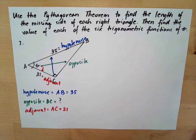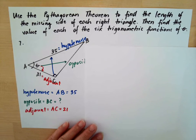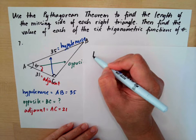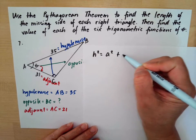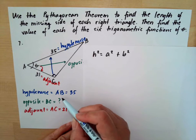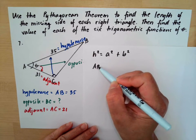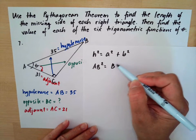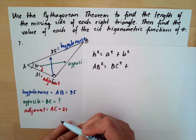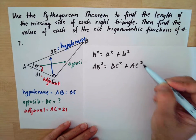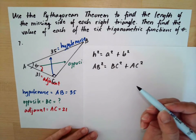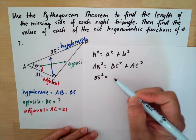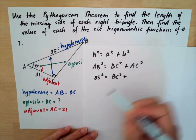Now we will use the Pythagorean theorem to solve for the unknown side, which is the opposite. The formula is H² = A² + B², where H is the hypotenuse AB, the opposite is BC, and the adjacent is AC. Substituting: 35² = BC² + 21².